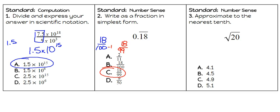And number three. Approximate to the nearest tenth. We have the square root of 20. We have to think of the perfect square that's less than 20. That would be 16. And the perfect square that's greater than 20 would be 25.